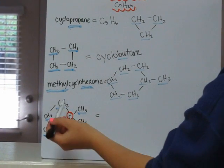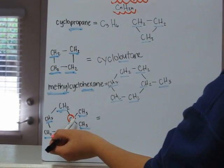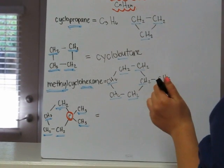Our next example here, we have one, two, three, four, five carbons. So we know that our last part of our name will be cyclopentane.